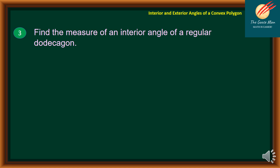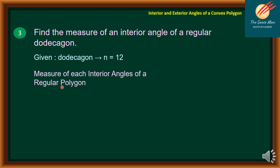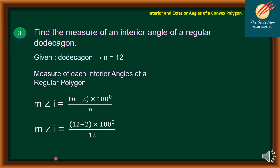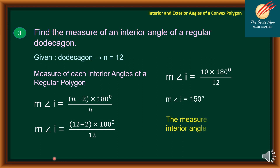Problem 3: Find the measure of one interior angle of a regular dodecagon. A dodecagon has 12 sides, so N equals 12. Using the formula (N minus 2) times 180 divided by N: (12 minus 2) times 180 divided by 12 equals 10 times 180 divided by 12. The measure of each interior angle equals 150 degrees.